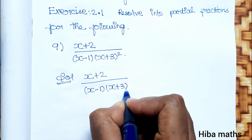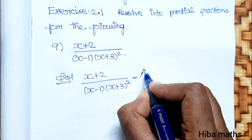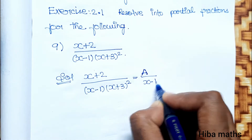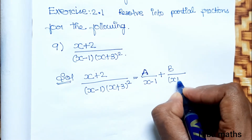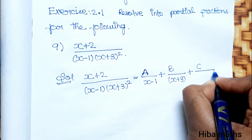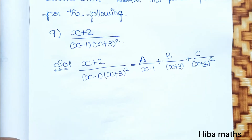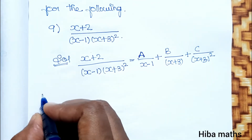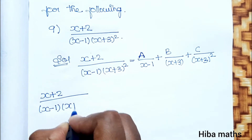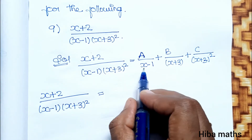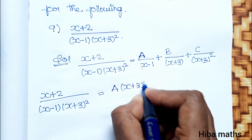The question is x plus 2 divided by x minus 1 into x plus 3 whole square. We resolve this as: A divided by x minus 1, plus B divided by x plus 3, plus C divided by x plus 3 whole square. Let's start solving with this setup.